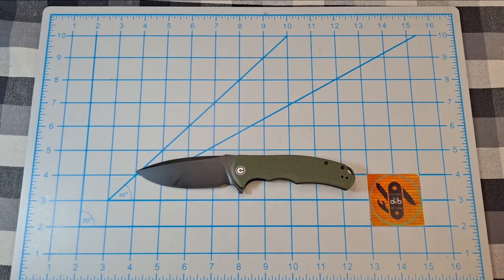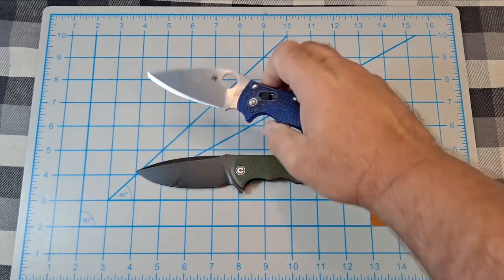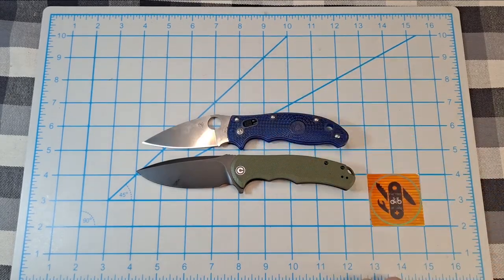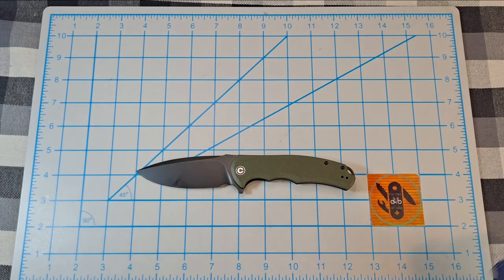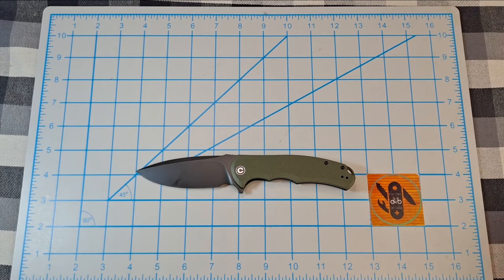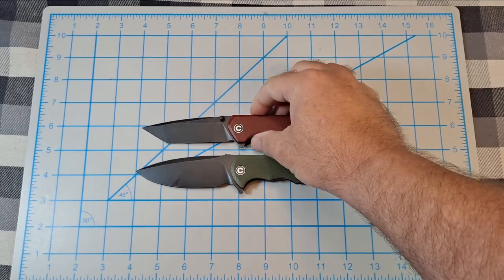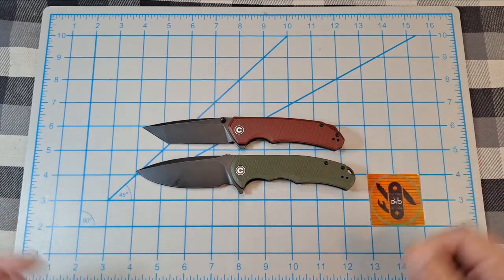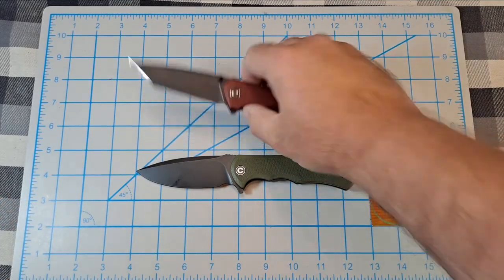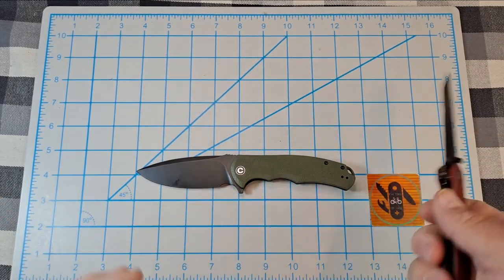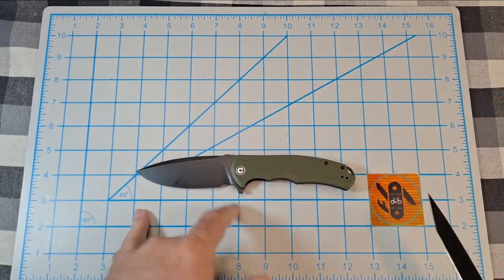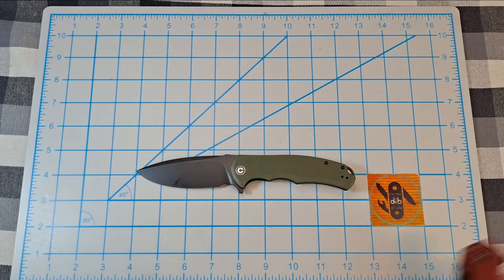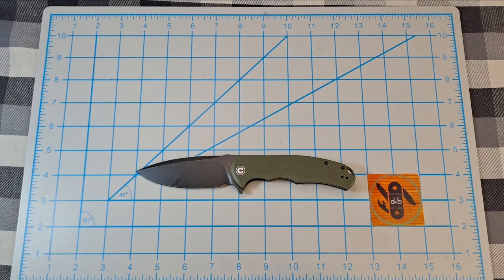Manix 2 Lightweight, Praxis is definitely longer. Bring out a couple of Civivis, how about the newer Brazen. Praxis is longer than Brazen. Brazen's got a three and a half inch blade, this has a 3.75 inch.